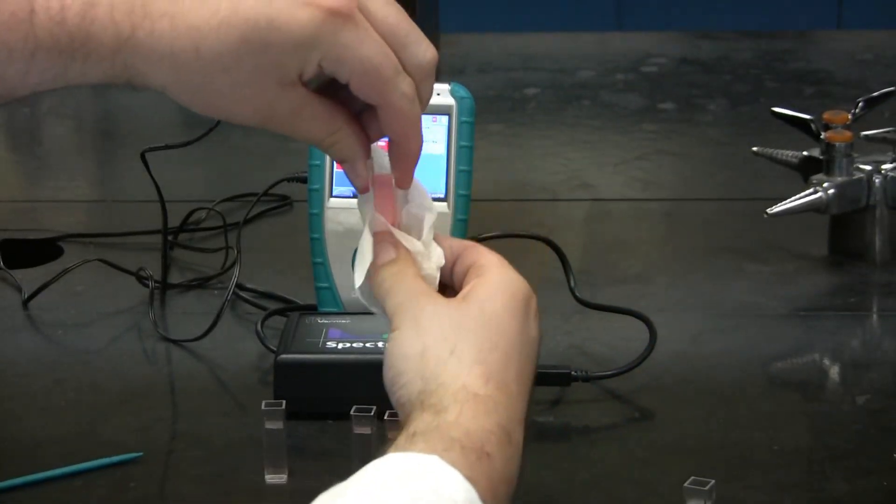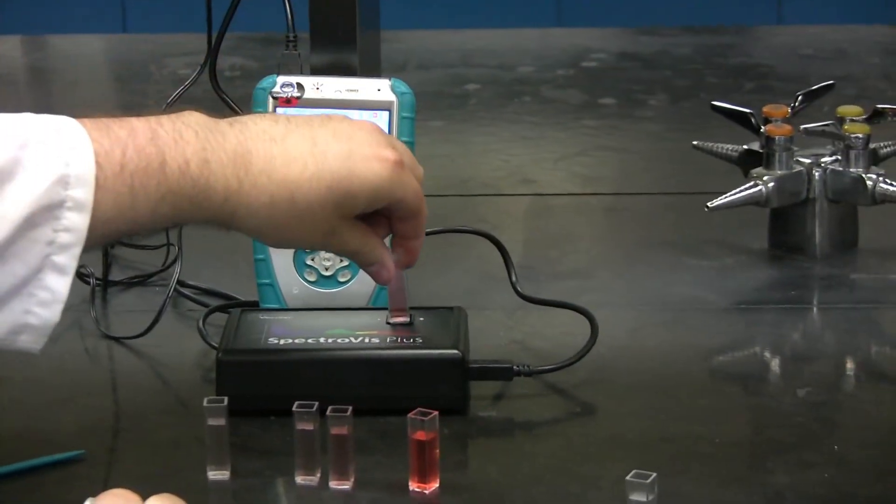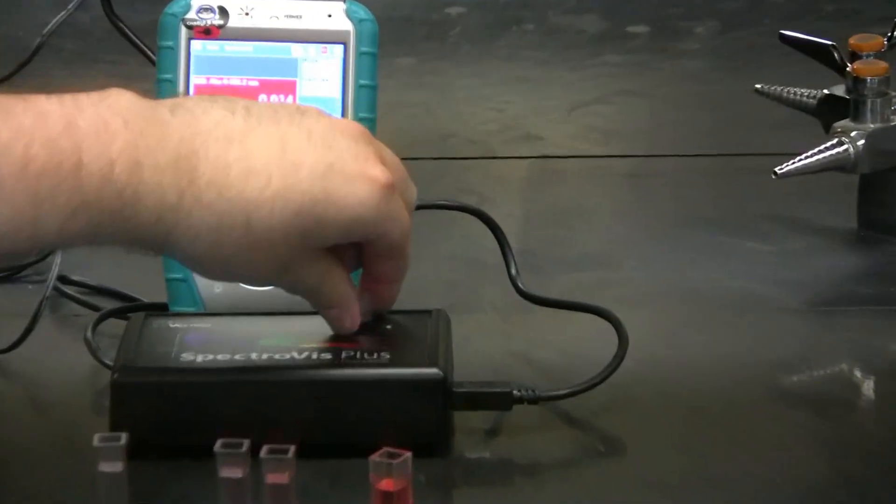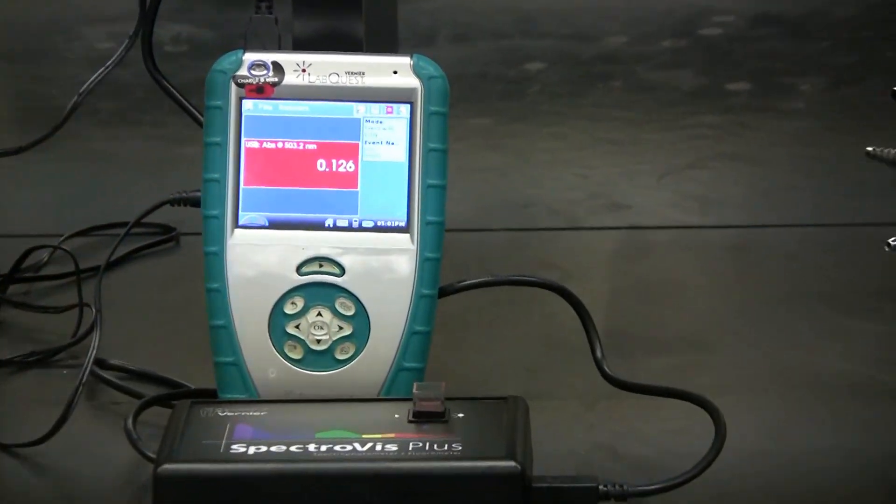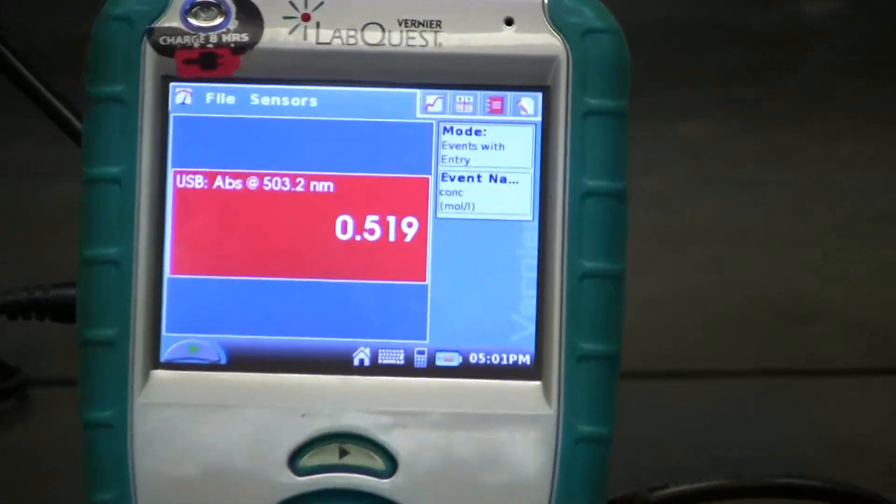Start by wiping it with a Kim Wipe and then place it into the cuvette holder. Record the following value and solve for the concentration using the previous equation.